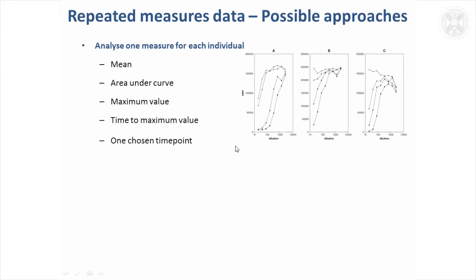First, if we think about simple ways you might analyze that, you might say well, I'll try and get one measurement per individual. So for each of these individual curves for each of the three different treatments, you might take the mean values across the curve, or the area under the curve which would be equivalent, or the maximum value.